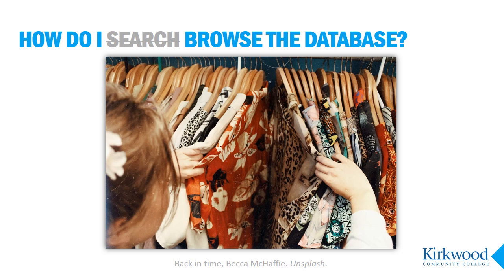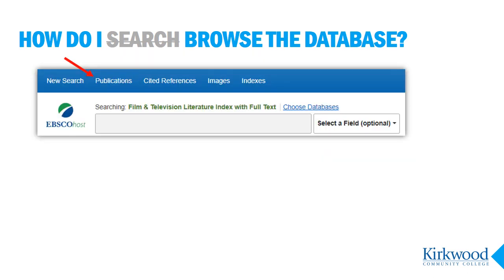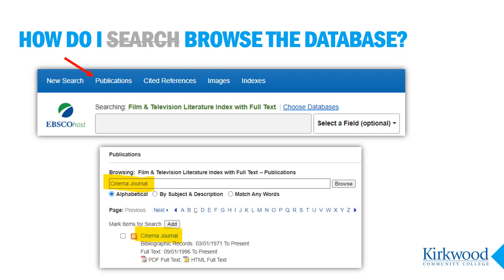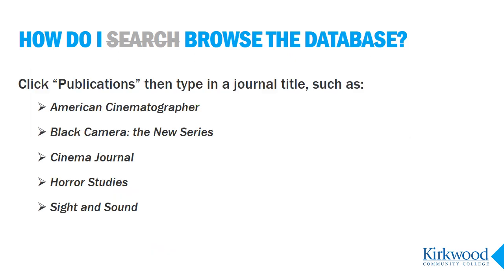Another way to find articles in the Film and TV Index is to browse. This can be a good technique if you're not sure exactly what you want to research or write about — you can scan through the contents of film magazines and journals to generate ideas. To browse, click on the publications link at the very top of the Film and TV Index. On the next page, type in the name of the magazine or journal you want to browse. Some good titles to try are American Cinematographer, Black Camera the New Series, Cinema Journal, Horror Studies, or Sight and Sound.